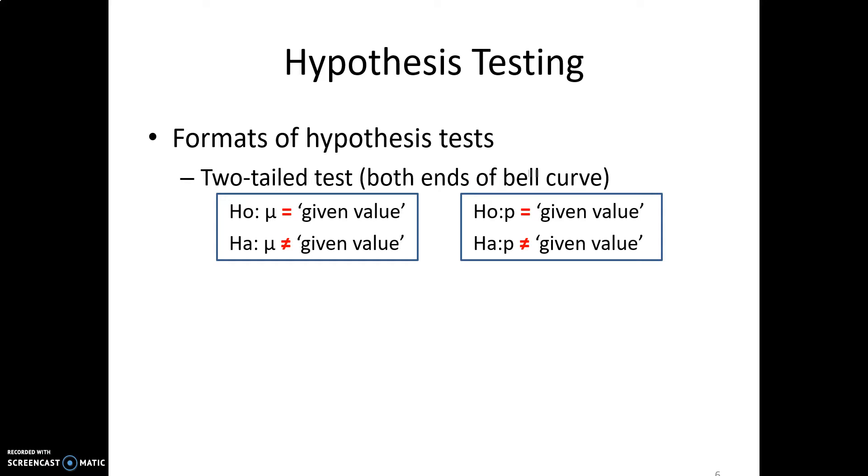One, the first one we'll talk about, is called a two-tailed test. Both ends of the bell curve. The key word here, key word is going to be something like different, not equal to. Especially in the research hypotheses, HA statement. Whereas the null hypotheses might state that the average is, or the proportion is, a certain value. So in this case, we're going to have equal signs.